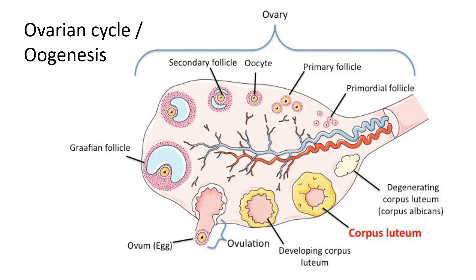As the follicle develops, the egg cell inside is known as an oocyte — it's still developing. The follicle starts to mature, becoming bigger and bigger until it reaches the mature follicle stage, which is called the Graafian follicle. The Graafian follicle is the mature follicle containing the egg cell that is almost ready to be released. The inner space holds nutrients and may also contain some waste products.